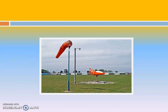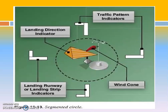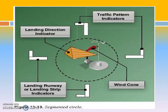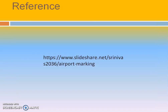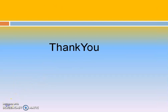This tetrahedron represents the landing direction indicator, and the T-L shape at the outside of the segmented circle is the traffic pattern indicator. This cone shape will fly like a flag, representing the wind direction. All these contents have been taken from SlideShare. Thank you.